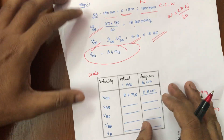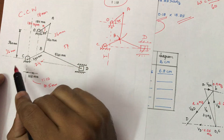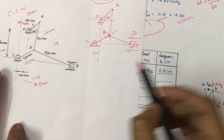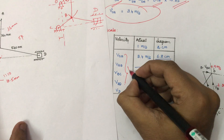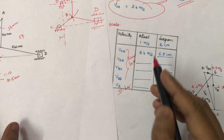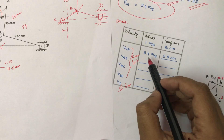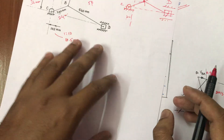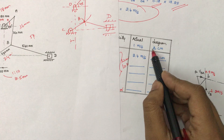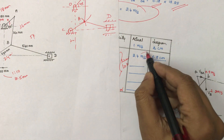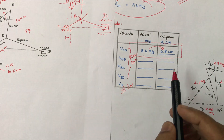Now we create a velocity scale table. We list the links: OA, then AB, BC, BD, and the slider D. We will find the velocity for each link. For the first link OA, we start drawing the velocity diagram from this link.